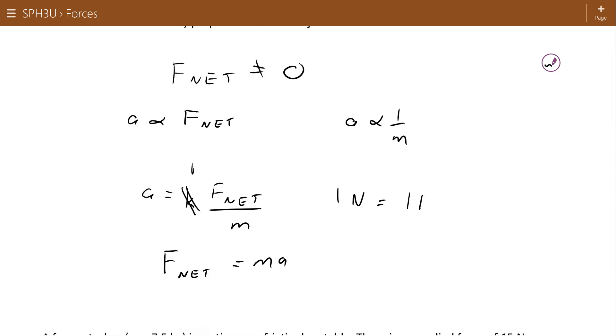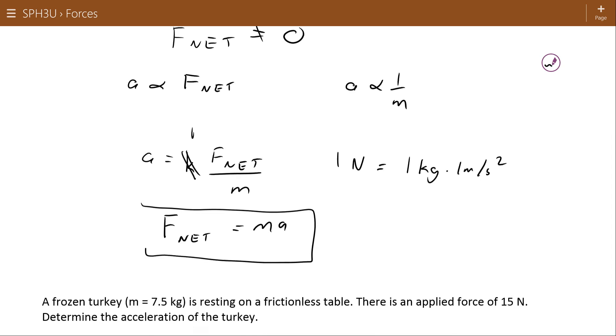One Newton is equal to one kilogram times one meter per second squared. And so since the units all work out, we do not need the constant and we can simply use this equation.